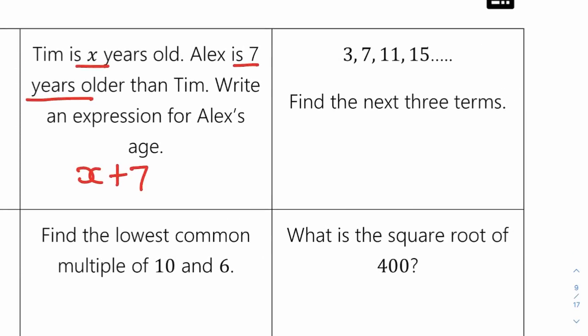3, 7, 11, 15 — find the next three terms. Check what the sequence is going up by: it's adding 4 each time. So 15 plus 4 is 19, then 19 plus 4 is 23, and 23 plus 4 is 27.